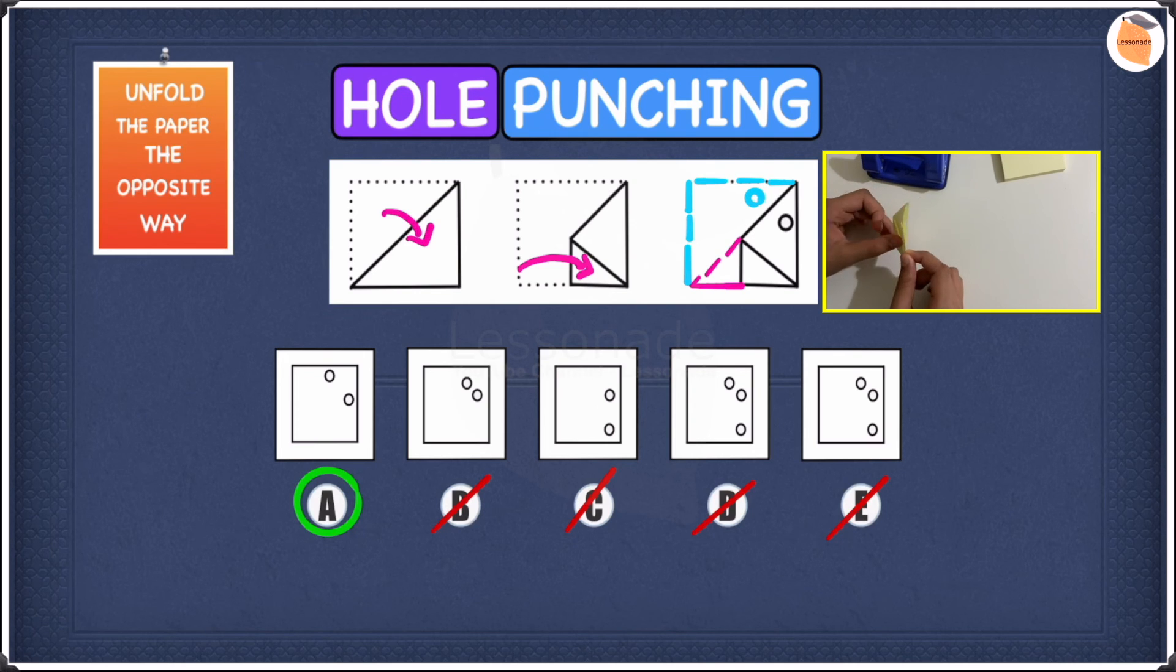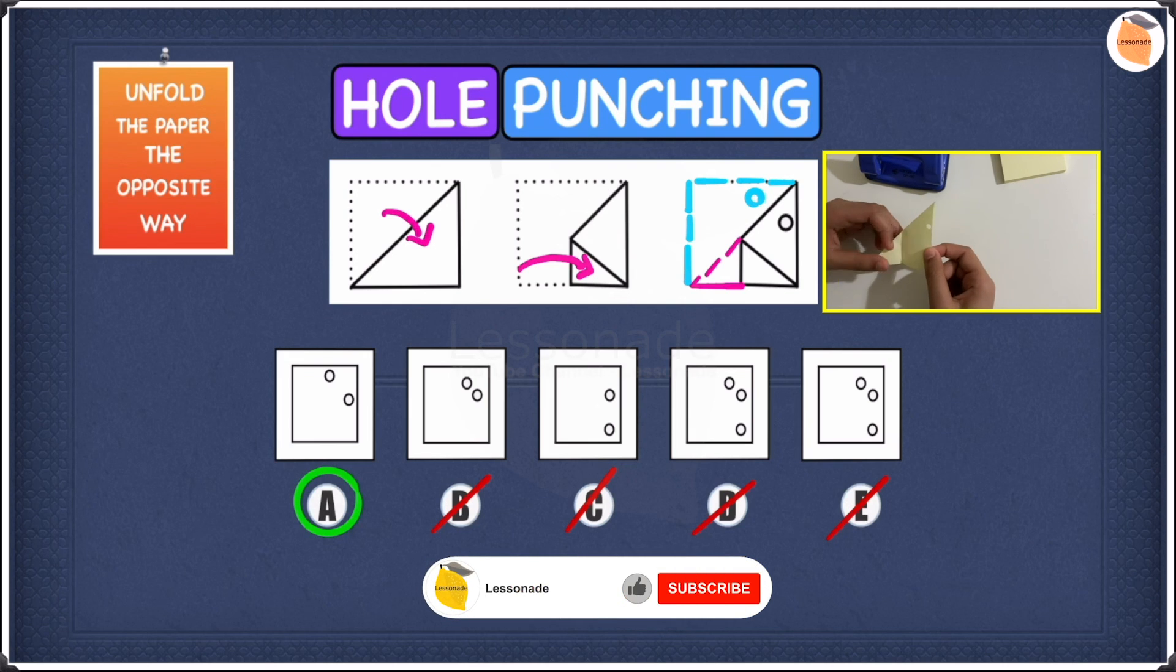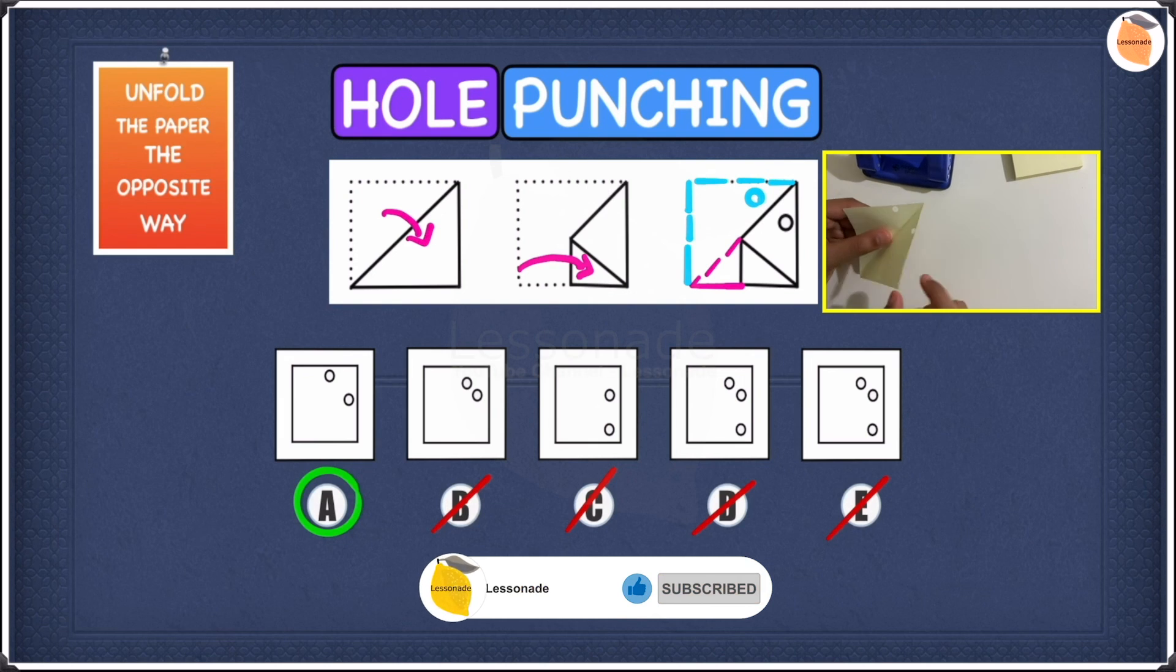Next, we'll have to unfold this paper to find our answer. So let's start by unfolding this corner. Then we're going to unfold the whole paper. And as you guys can see, we have two holes.